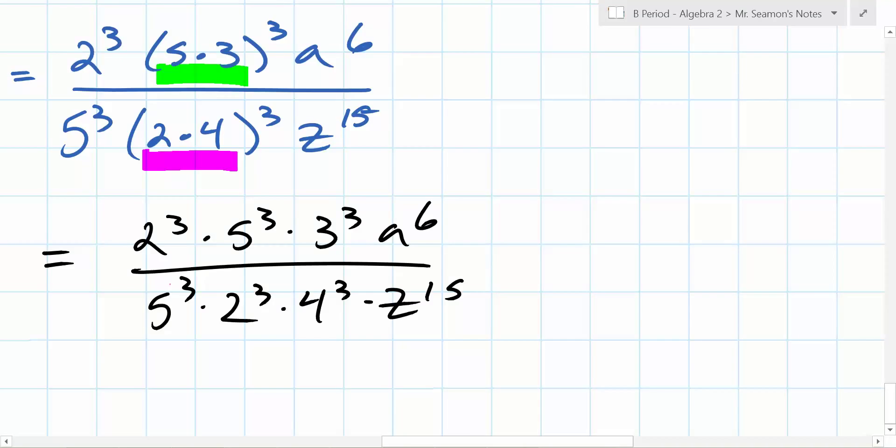So, you have 2 to the 3rd times 5 to the 3rd times 3 to the 3rd times a over 5 to the 3rd times 2 to the 3rd times 4 to the 3rd times z to the... Why did I do that now? Can someone tell me? What can I do now? No questions, just an answer. What can I do now? Yeah. That goes away. That goes away.